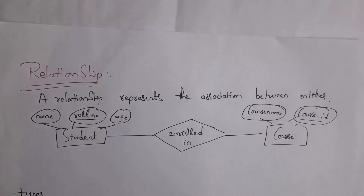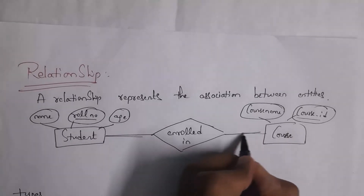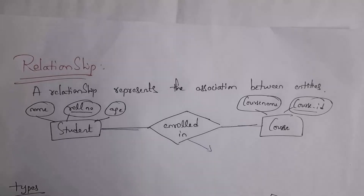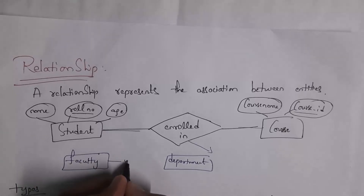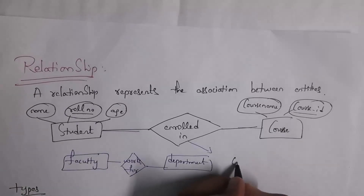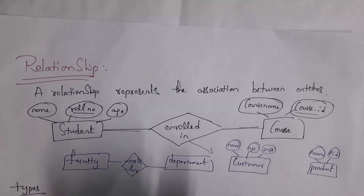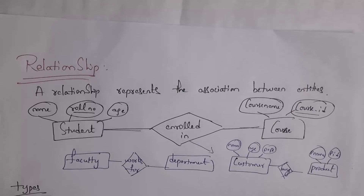Next I will explain what is relationship. A relationship represents the association between entities. For example, there is a student entity and a course entity — a student will enroll in a course, so I will connect these two entities with an 'enrolled in' relationship. We represent relationships using a diamond symbol. Similarly, faculty works for a department, and a customer buys a product — in this way you can establish relationships between entities.